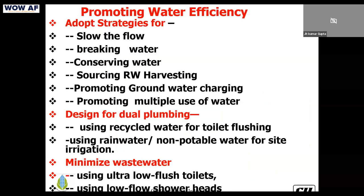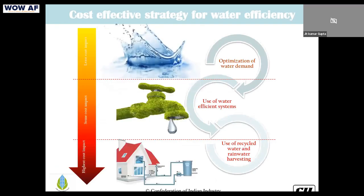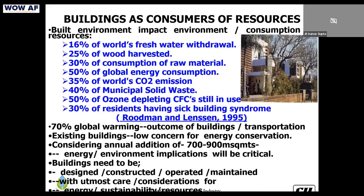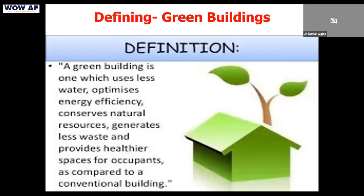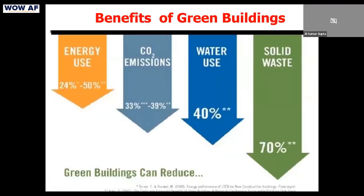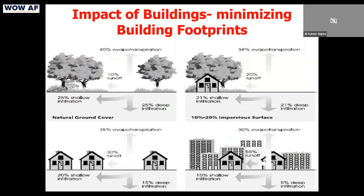Strategies for water management at the building level include slowing the flow — breaking the water — and using a dual plumbing system to reuse water. Buildings remain highly water-inefficient and consume a lot of water. With green buildings, we can reduce water consumption by up to 40 percent.